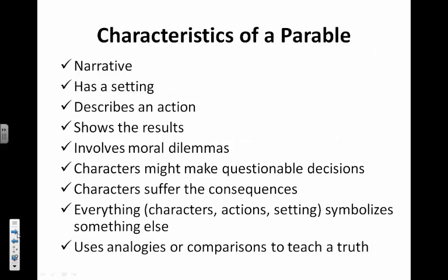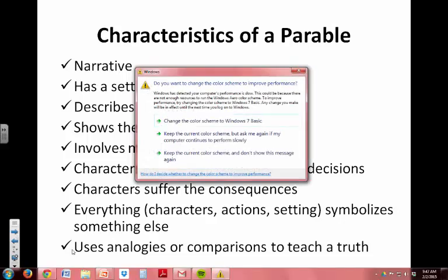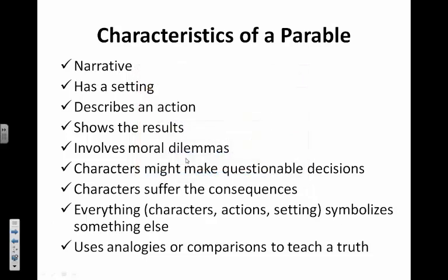The characteristics are pretty simple. First, it's a narrative — a story that has a setting, describes an action, and shows the results. An important one involves moral dilemmas where characters might make questionable decisions that other people wouldn't really agree with. The character suffers the consequences. And everything — the characters, their actions, the settings — all symbolize something else. It also uses analogies or comparisons to teach a truth.